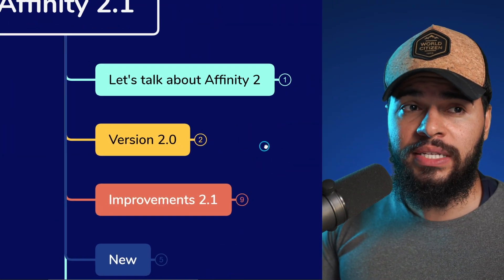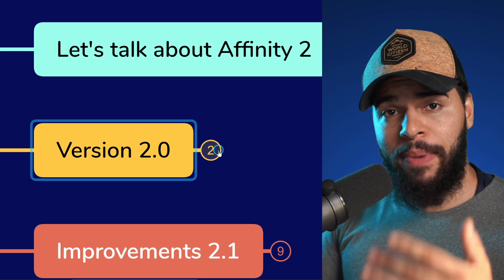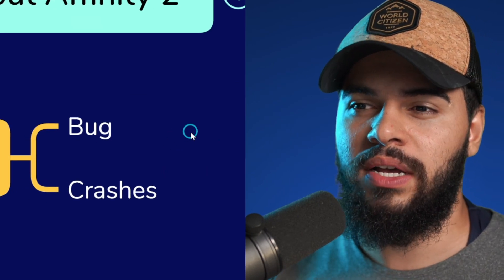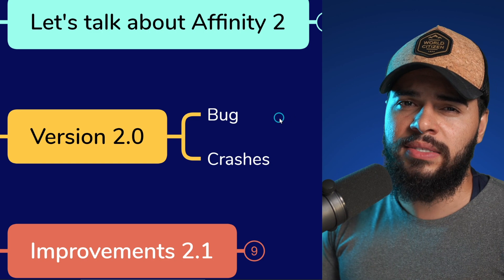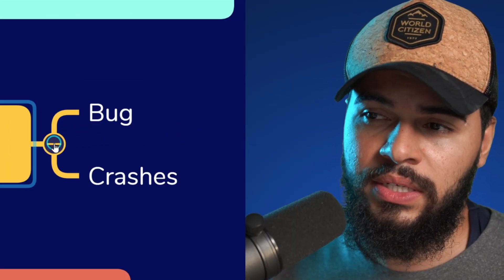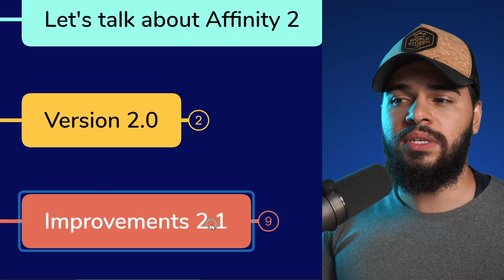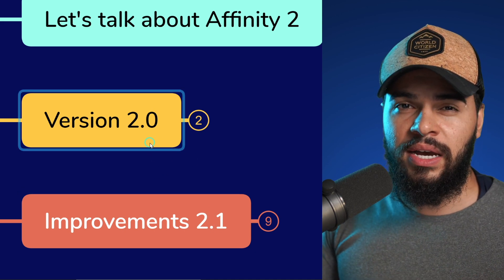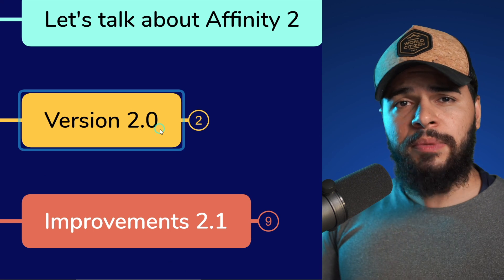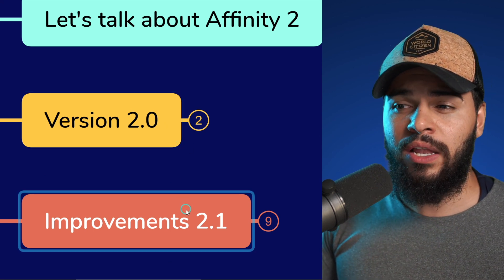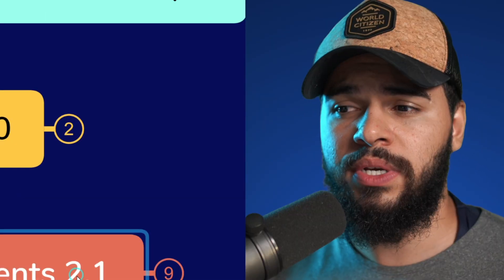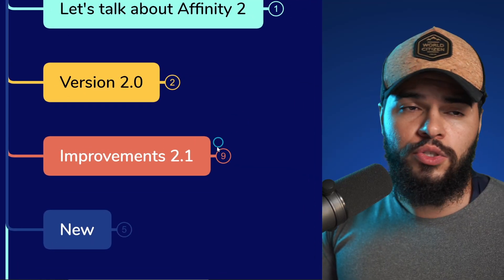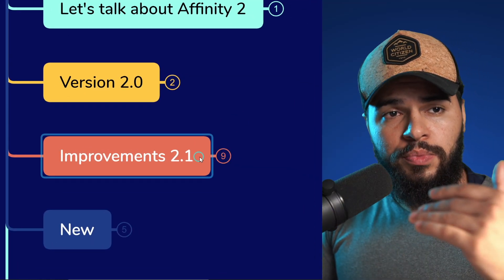Let's talk about version 2. Affinity 2.0 was released in the past year and it came with a lot of bugs and crashes. Even in some of my tutorials, I got a lot of lags. As a user, I got very disappointed. However, using version 2.1, I got very happy because they improved all the bad sides of 2.0. We cannot expect a lot of new resources in 2.1 because it was more about fixing 2.0.